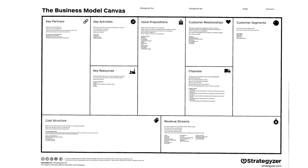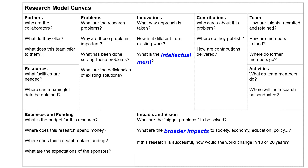The Business Model Canvas asks nine essential questions about every business. From the left upper corner, the questions are: 1. Key Partners, 2. Key Activities, 3. Key Resources, 4. Value Propositions, 5. Customer Relationships, 6. Channels, 7. Customer Segments, 8. Cost Structure, and 9. Revenue Streams.